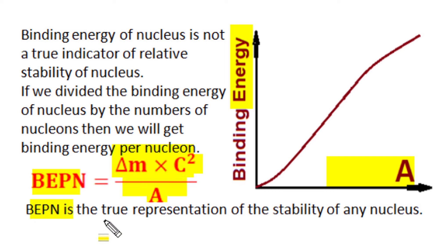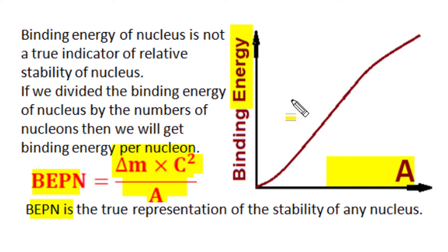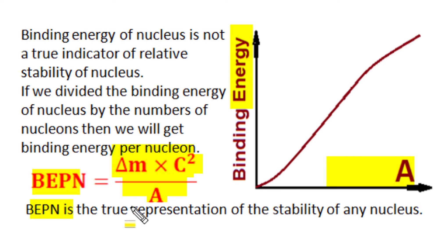Binding energy per nucleon is a true representation of the stability of any nucleus. A nucleus with a higher binding energy per nucleon — such as Fe-56 — is more stable than other nuclei. Let's understand the calculation of binding energy per nucleon for some typical nucleus compositions.